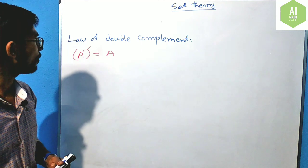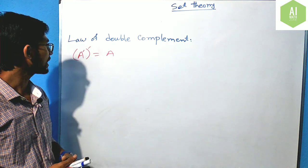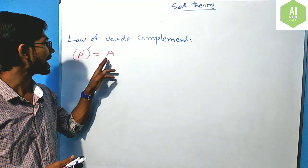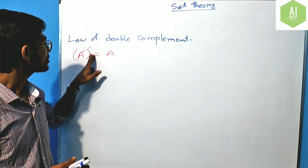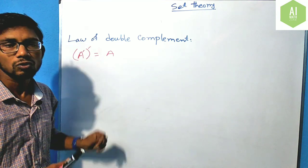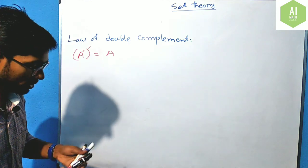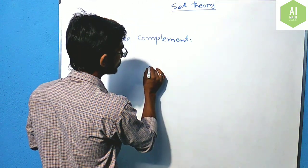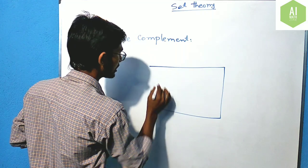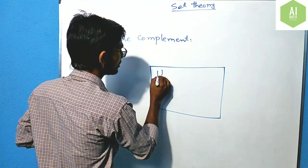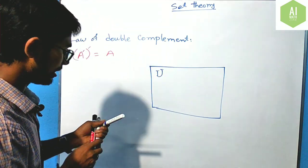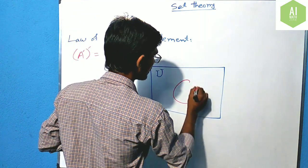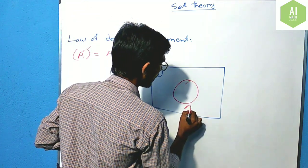The next one is the law of double complement. If we take the complement of a complement set, we will get the exact same set. This will also be shown using the Venn diagram. Suppose this rectangle is the universal set U, and any set A is given inside it.